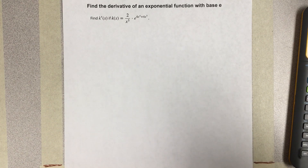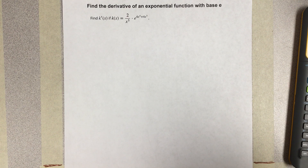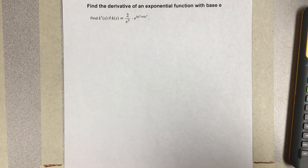In this video, we're going to find the derivative of an exponential function with base e. Find k prime of x if k of x is equal to 2 over x to the 5th times e to the 4x to the 4th plus 4x cubed.